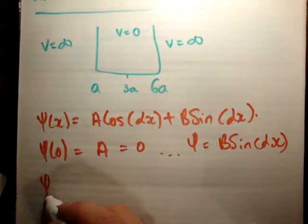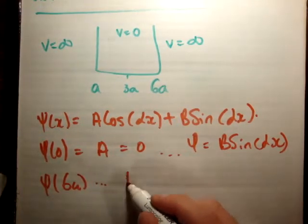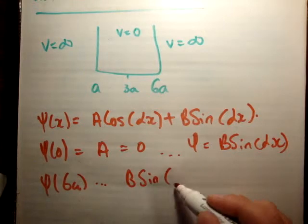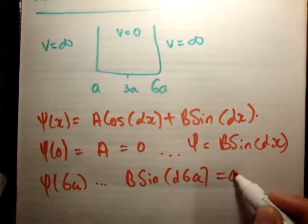Next, apply ψ(6a). If you apply that, we'll find that B times the sine of 6αa is equal to 0 for the same reason.